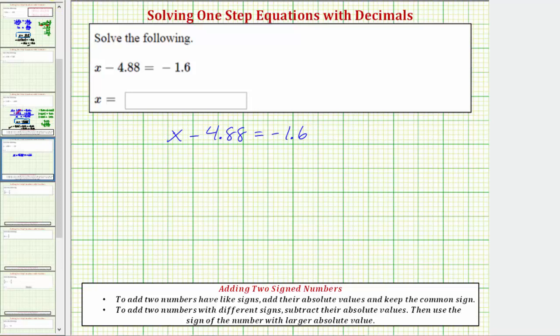The solution to the equation is the value of x that makes this difference on the left equal to negative 1.6. To solve the equation, we need to isolate x on one side of the equation. Because x is on the left, our solution will be in the form x equals some value that makes this difference equal to negative 1.6.